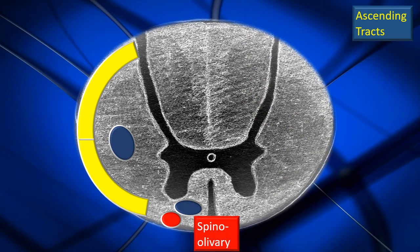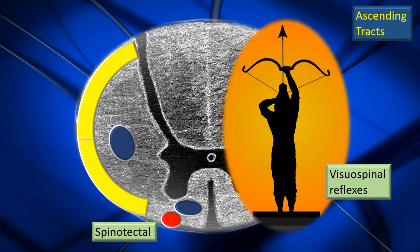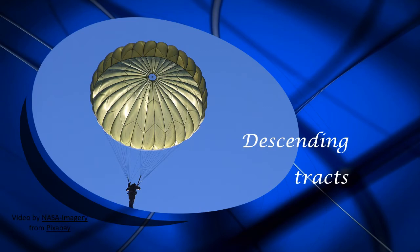Next, the spinoolivary tract. Next, the spinotectal tract, which is associated with visuospinal reflexes. This means it helps coordinate, through its sensory inputs, between what is seen by the eye and what kind of reflexes are required by the rest of the body muscles in tune with what is being seen — that's why we call it visuospinal reflexes. That's an overview of the ascending tracts.